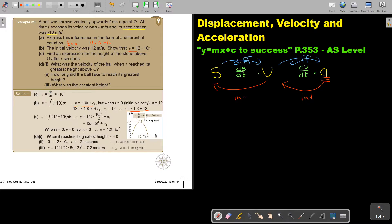Find an expression for the height of the stone above o after t seconds. Now height is s. Now I have velocity. But what will I do? I will integrate again to get s. And that's what I did. There's my velocity. I integrate. Don't forget your c. But then I say when t is zero, s is zero. When there's no time, there was no movement. And I get and I just substitute that.